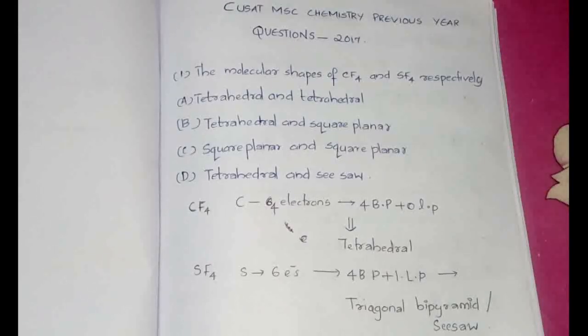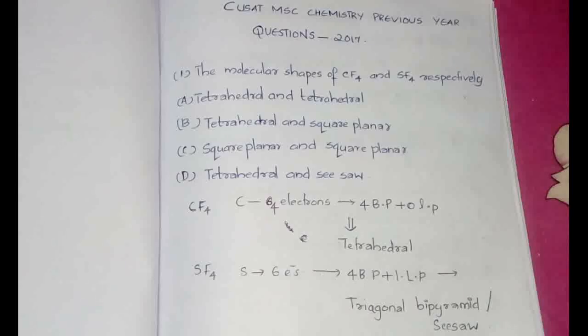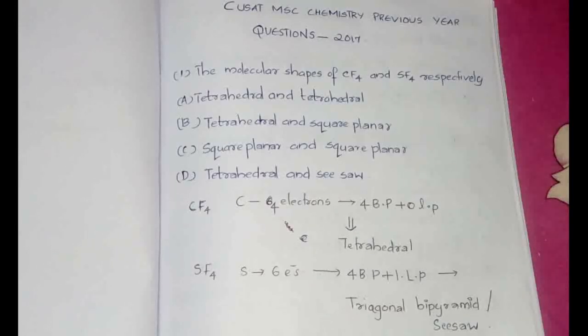Now let's go to the first question. The first question here is: the molecular shapes of CF4 and SF4 respectively are. For people who have not followed my video so far, I have already explained how to relate the number of bond pair, lone pairs, and the shape of the particular molecule. I'll be putting the link of that video in the description box.